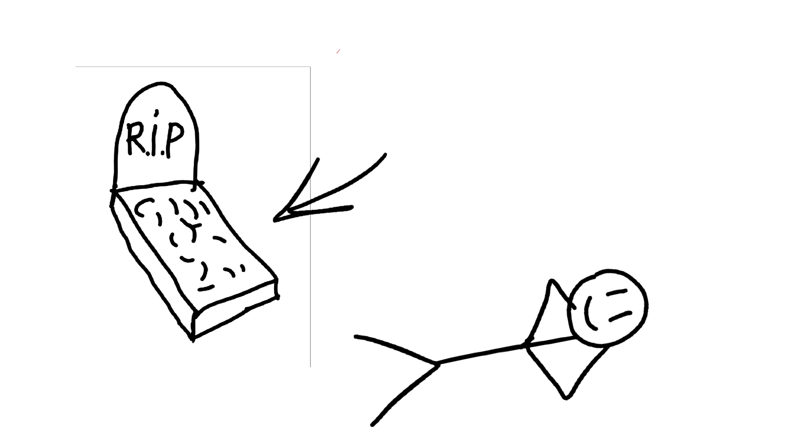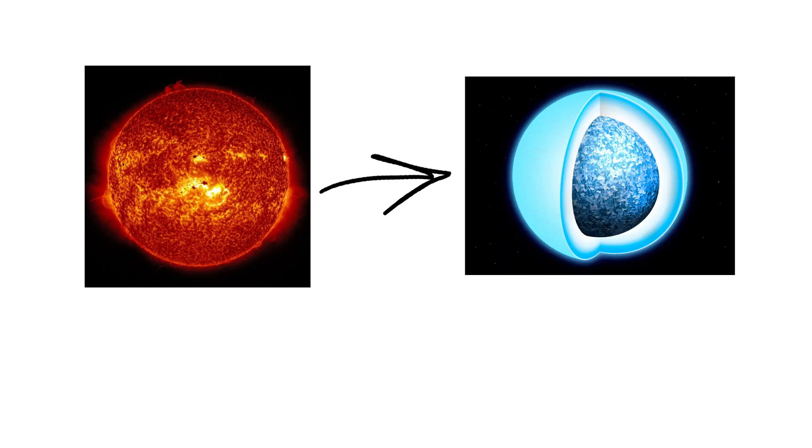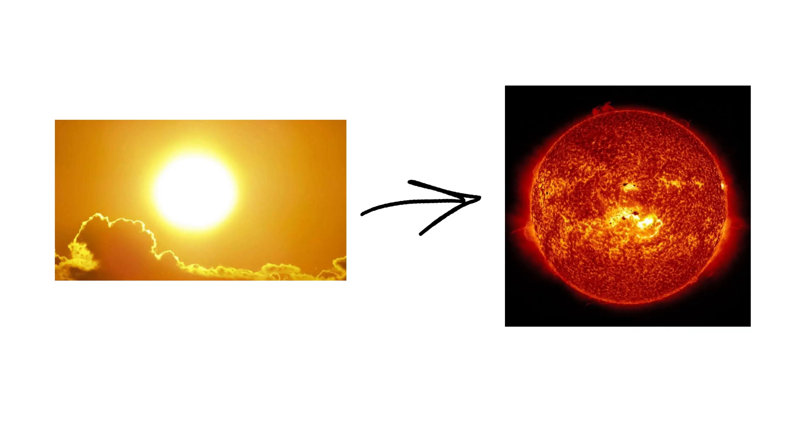These stars are close to the end of their lives and will eventually shed their outer layers, leaving a dense core that becomes a white dwarf. Studying red giants helps astronomers understand how stars evolve and the future of our own sun, which will become a red giant in about 5 billion years.